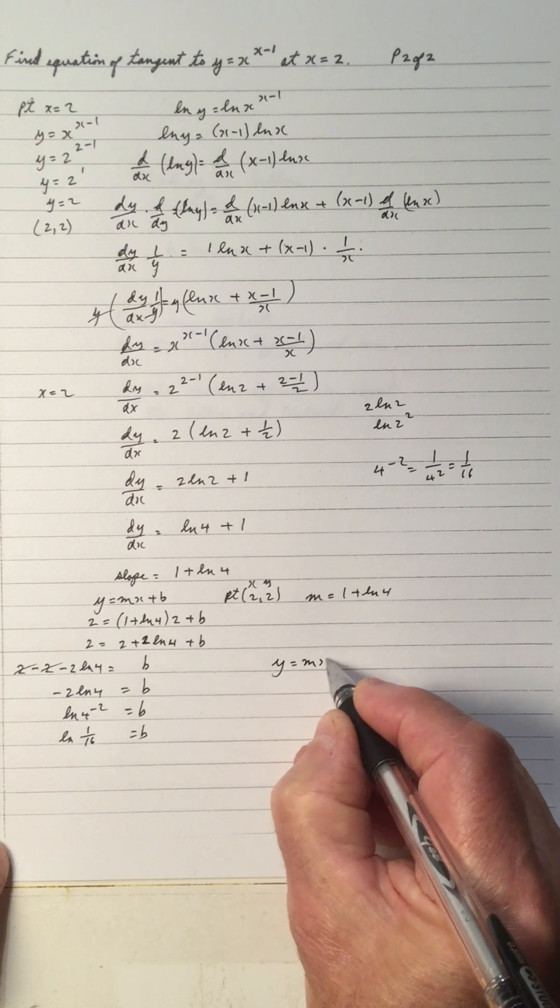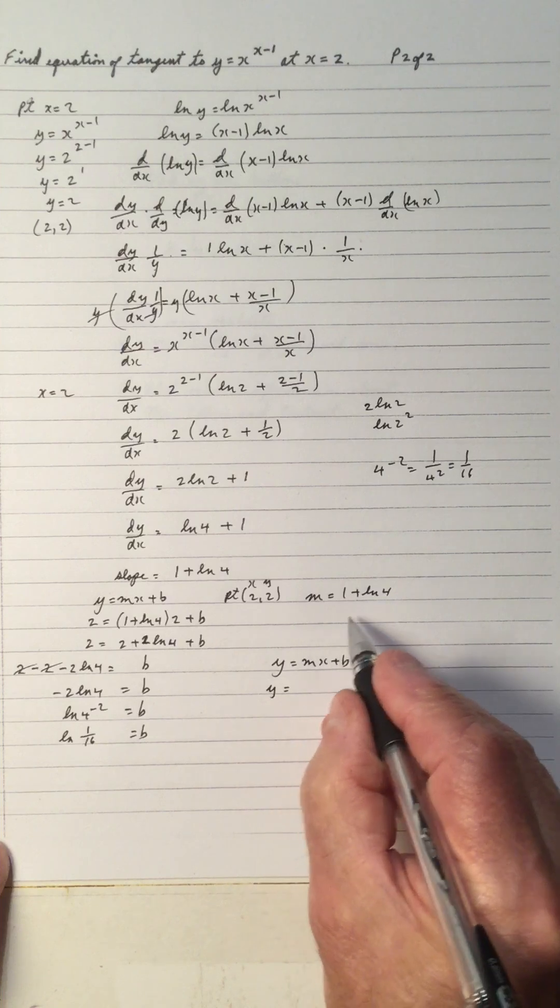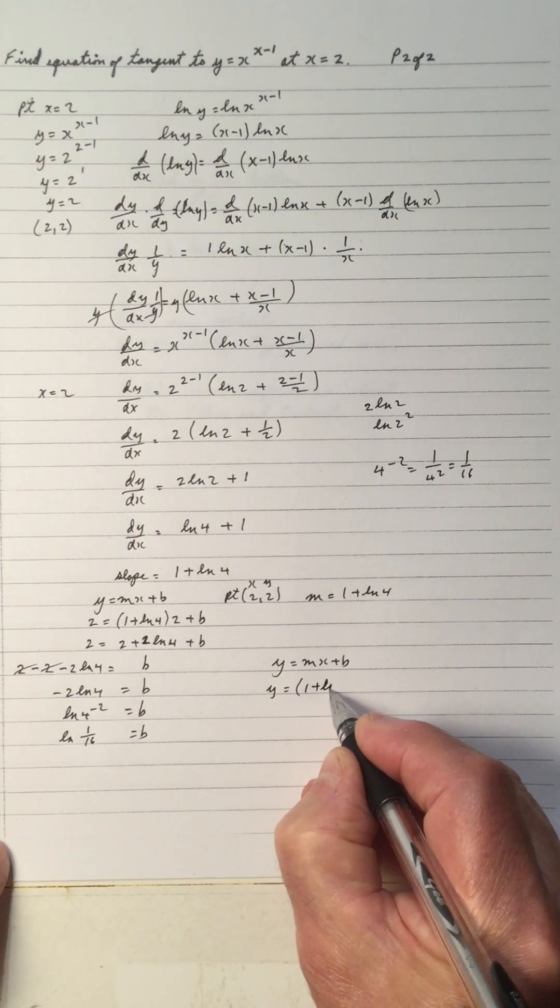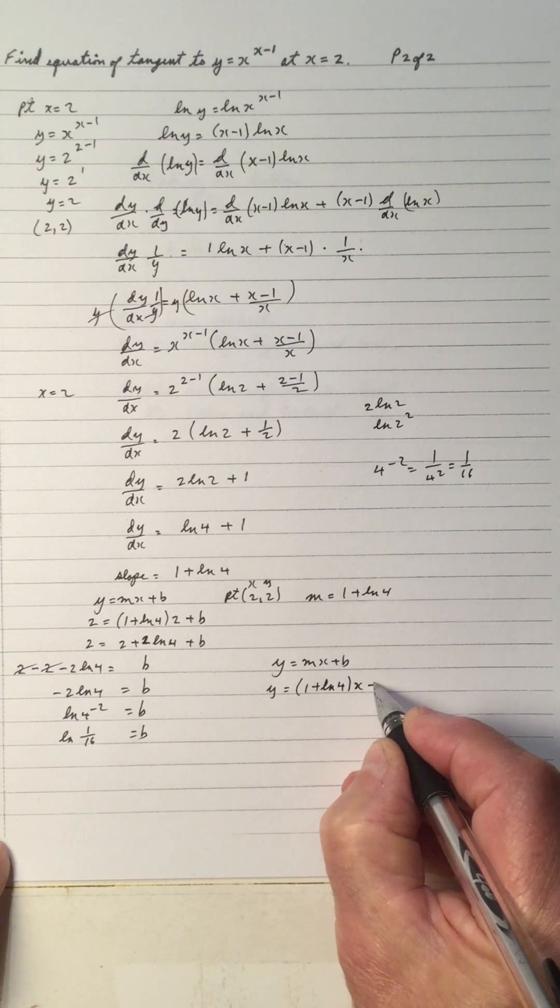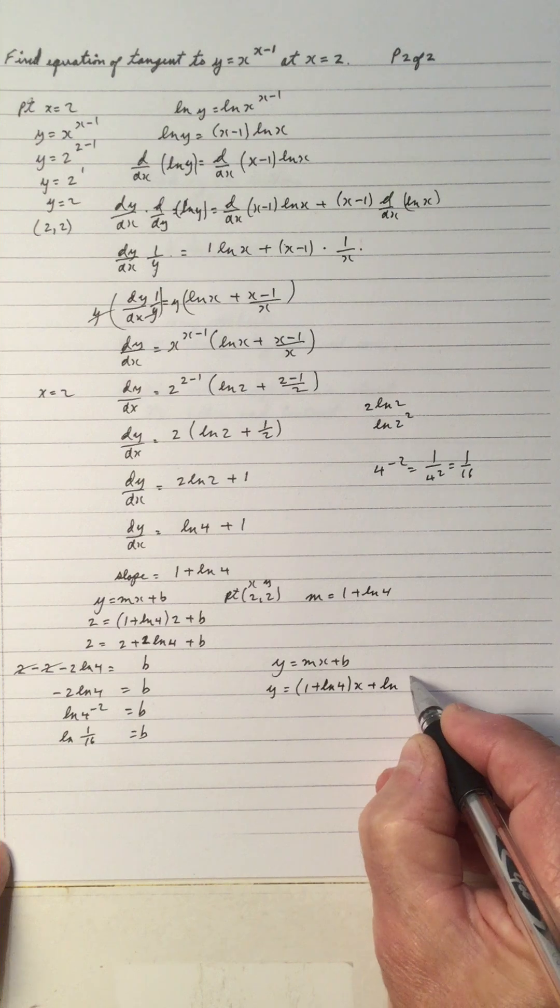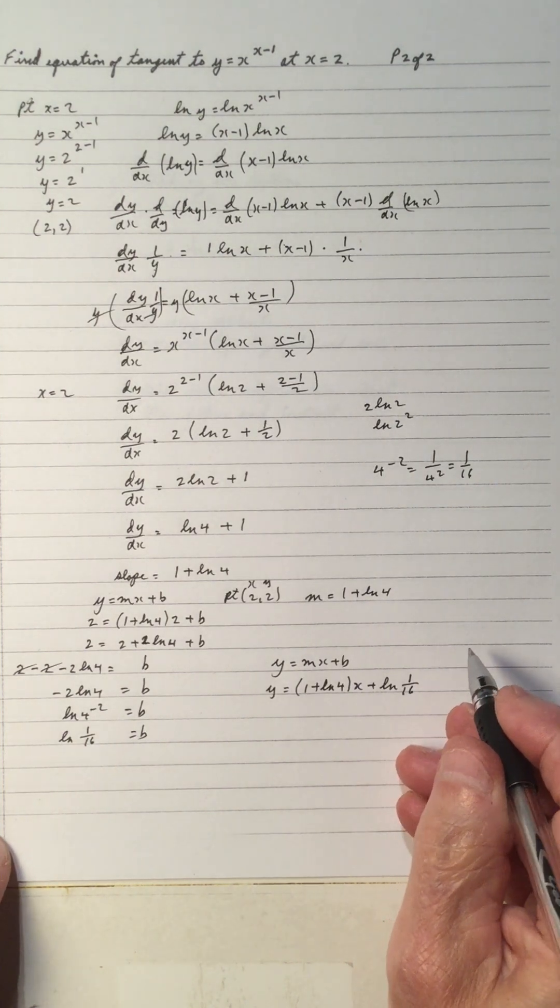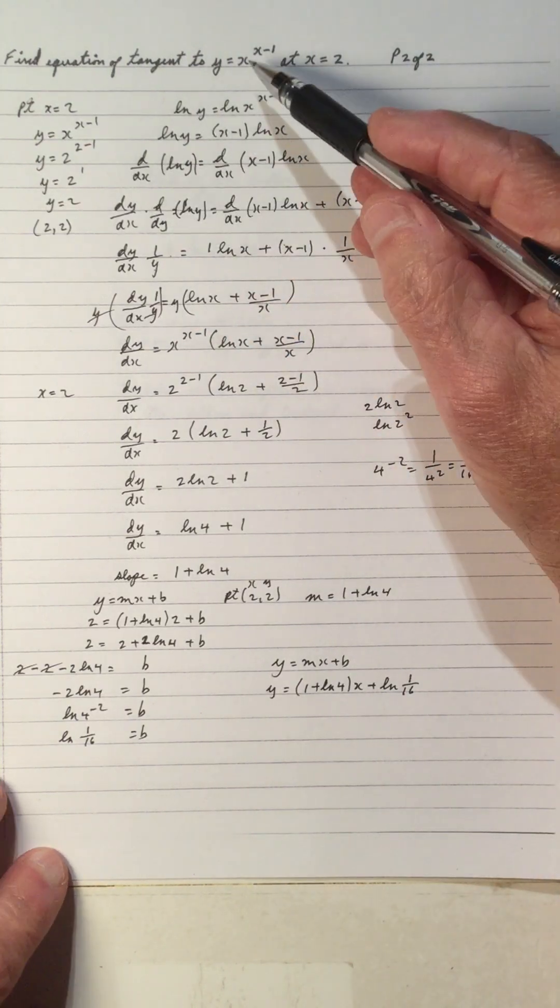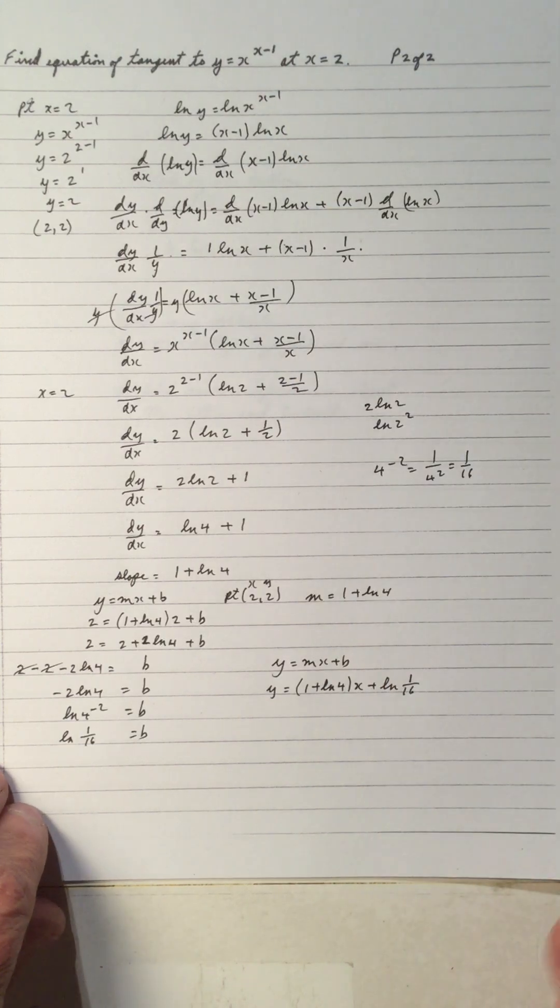So y equals mx plus b. So the slope is 1 plus ln 4 times x, and b is ln of 1 over 16. So that's the equation of the tangent at the point 2, 2 for this function, y equals x to the x minus 1.